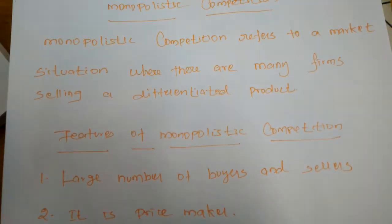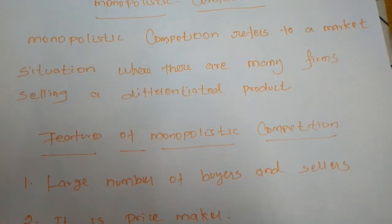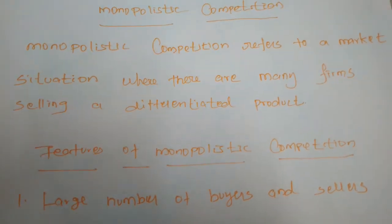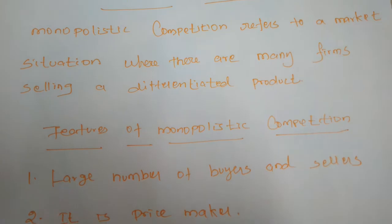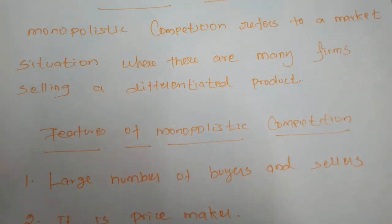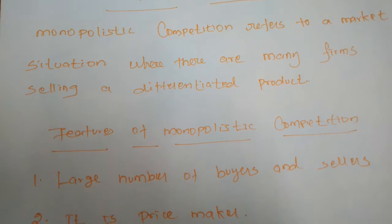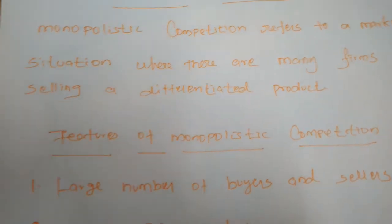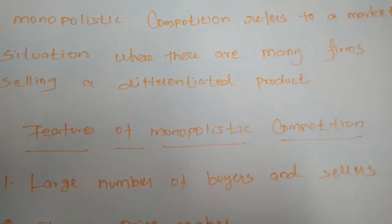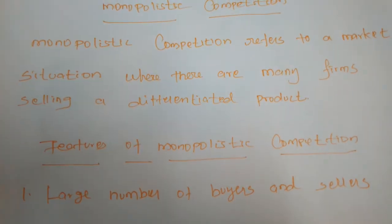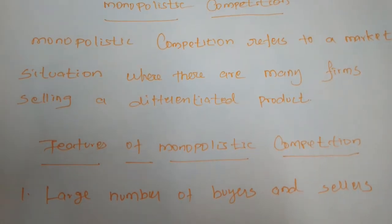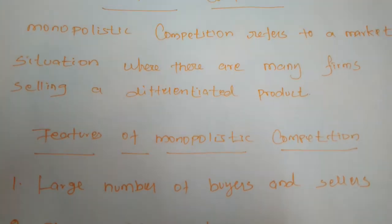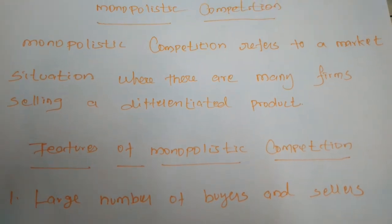Based on the production cost or the power of the firms, it can easily increase or decrease the price. For example, the price for one soap may be very low while another company's soap may be very high. Some products are produced by different types of firms — in monopolistic competition, there are many firms selling differentiated products.